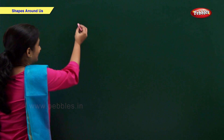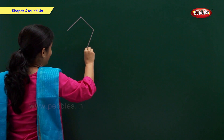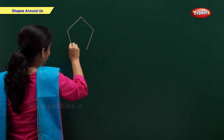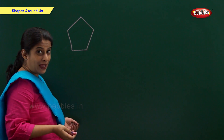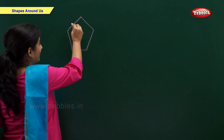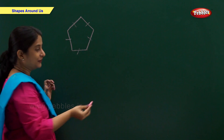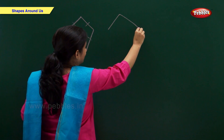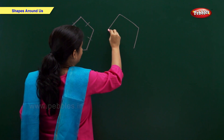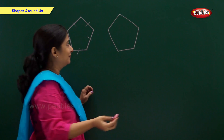Now let's draw a pentagon. A pentagon has five sides — one, two, three, four, five. Pentagon.